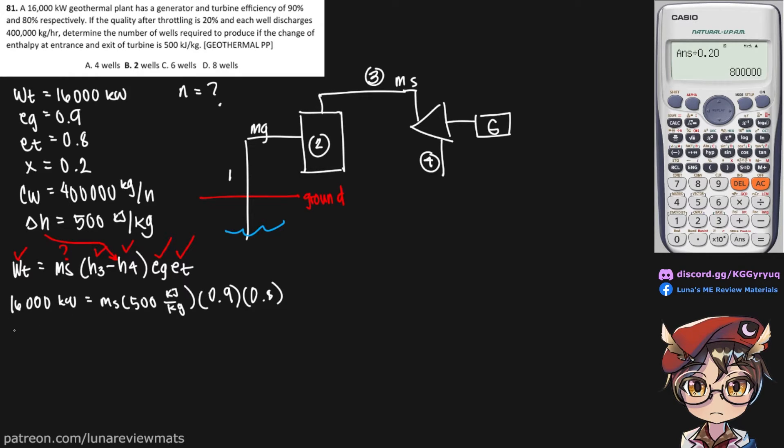And this should give us 44.4 kilograms of steam per second. Now notice we are working on a kilogram per hour basis, so if we multiply this by 3600, we will arrive at a value of 160,000 kilograms of steam per hour. But we can't really use this yet because we need to find mg.